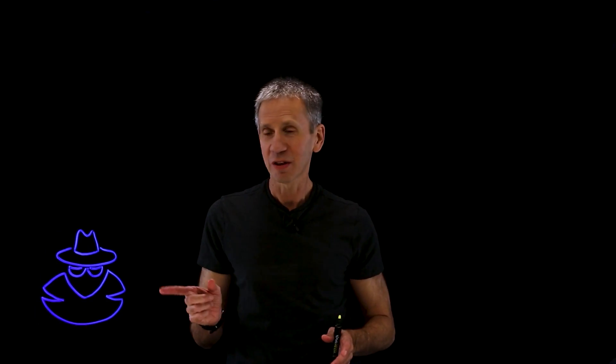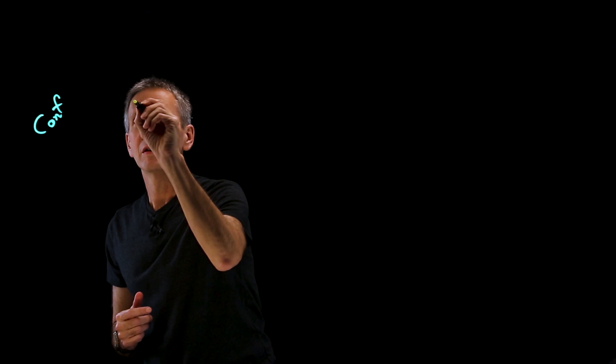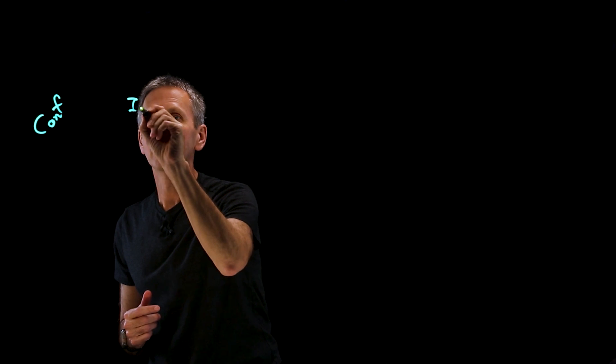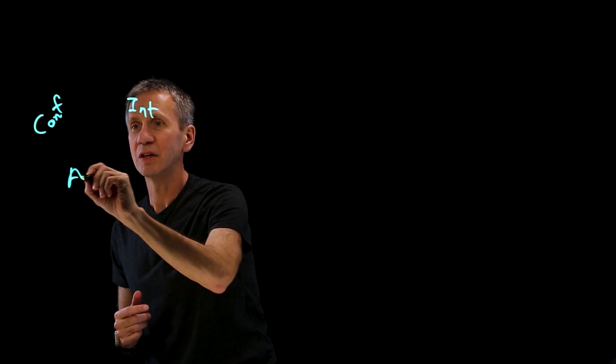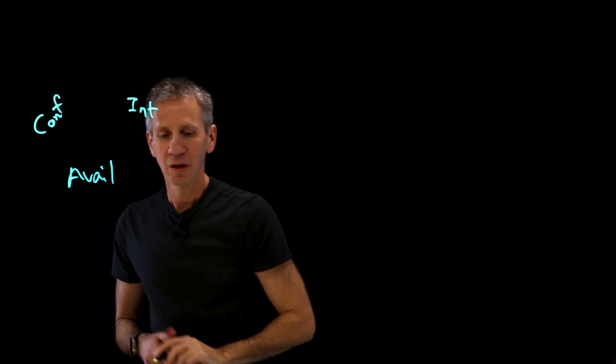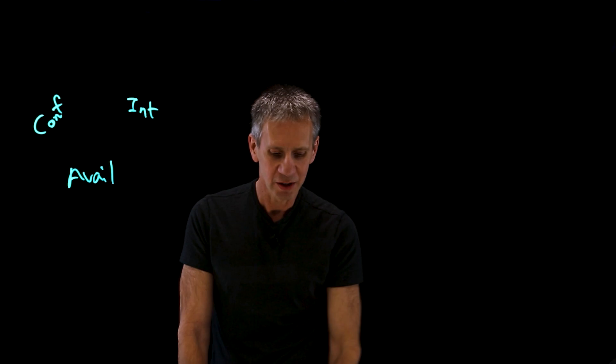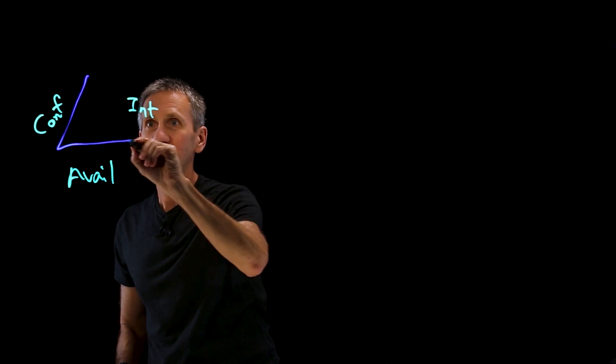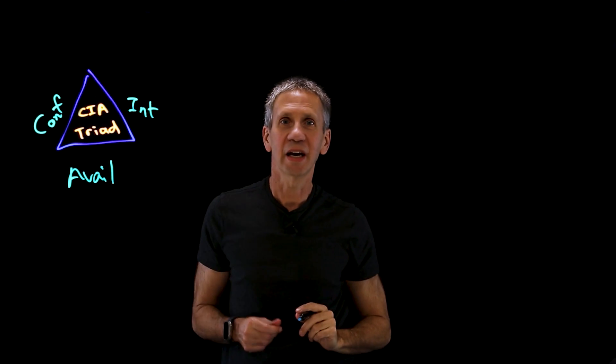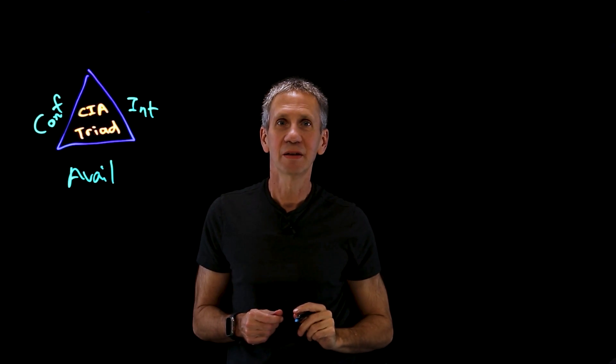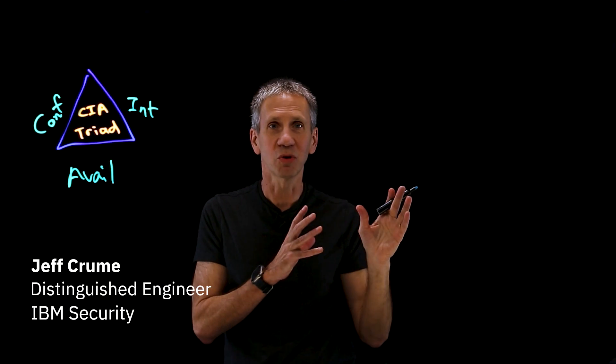When you think cyber security, you should think CIA. No, not those spy guys — a different kind of CIA. What I mean is confidentiality, integrity, and availability. These three things make up something that we call the CIA triad. Now let's talk about those ideas in a little more detail.